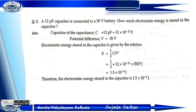Problem 3: A 12 picofarad capacitor is connected to a 50 volt battery. How much electrostatic energy is stored in the capacitor? Given: C = 12 picofarad = 12×10⁻¹² farad, and potential difference V = 50 volt. The electrostatic energy stored is given by E = ½CV².